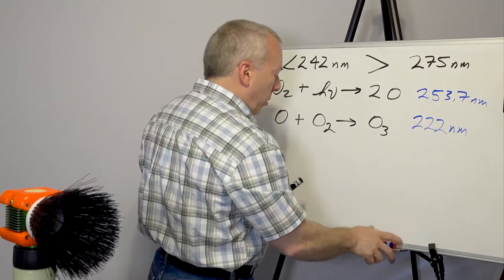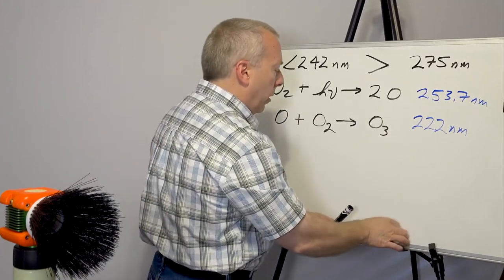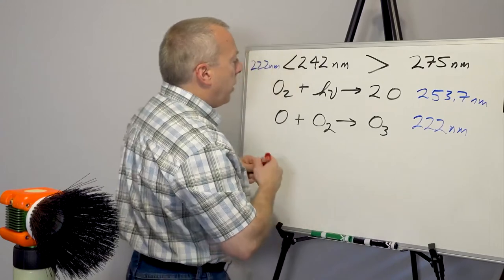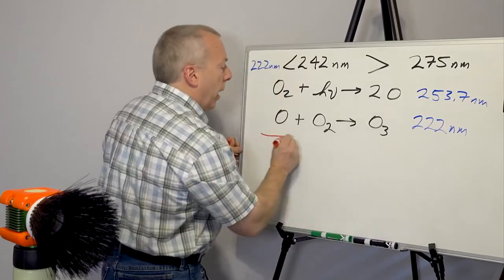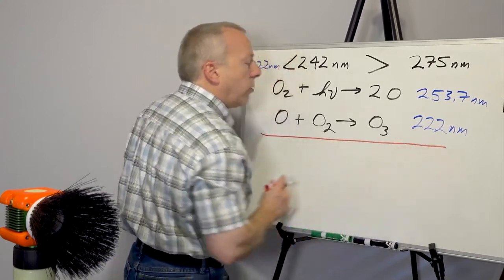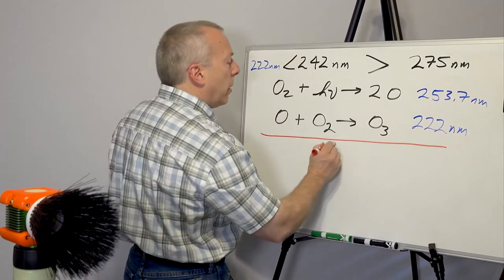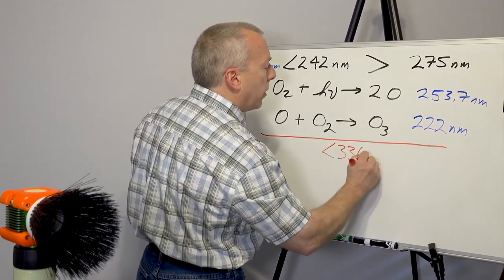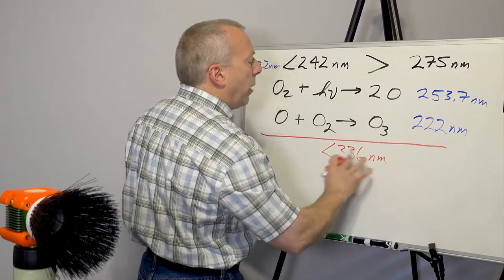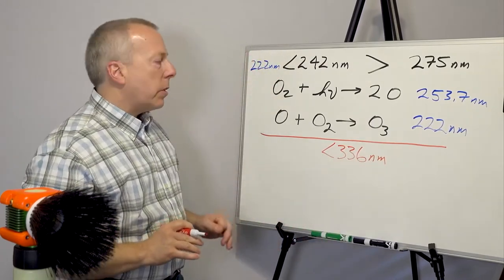What Chapman also showed, and I'll change colors here, is that at any ultraviolet frequency that is less than 336 nanometers, so any wavelength less than 336 nanometers,